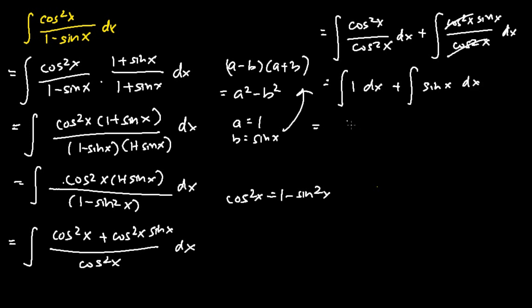And now we evaluate the integral. The integral of 1 dx is just x, the integral of sine x is negative cosine x. And here is the answer: the integration of cosine squared x over 1 minus sine x dx is x minus cosine x plus C.